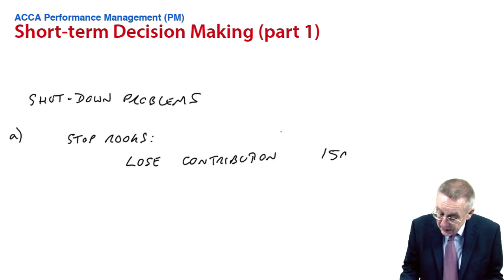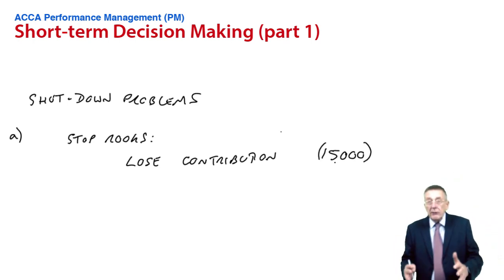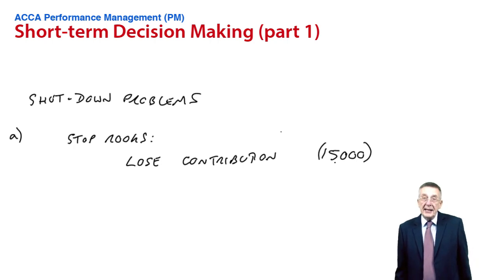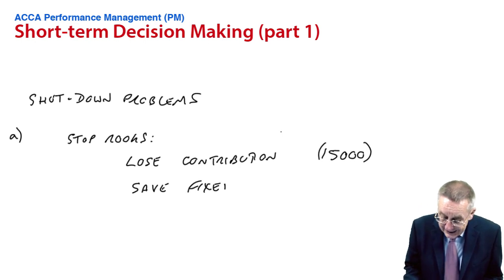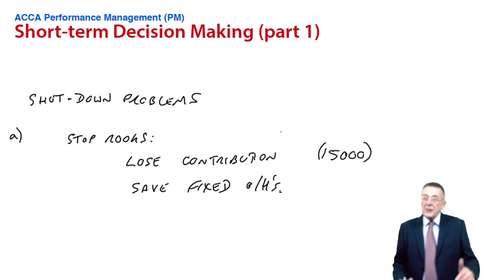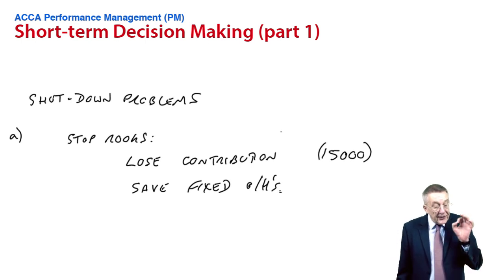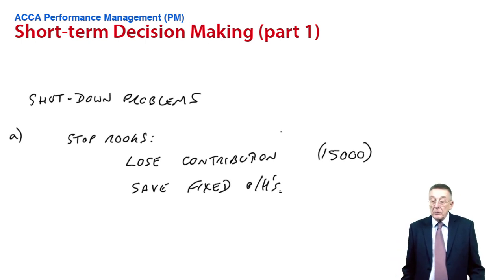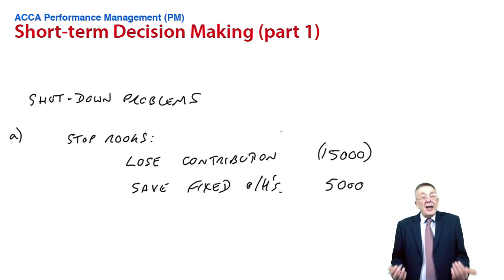The contribution is 15,000. So our current total profit would go down by 15,000. On the other hand, stopping rooks will save the fixed overheads. 5,000 of them will be saved if we stop rooks. So saving those fixed overheads would push our total profit up by 5,000.